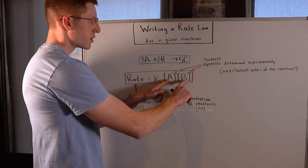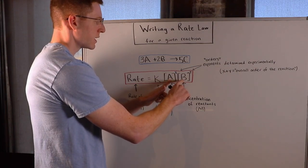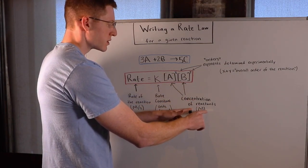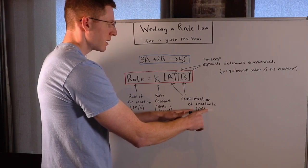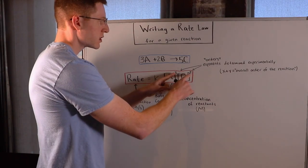times the concentration of the reactants. So A and B, the concentration of A times the concentration of B. And these are, of course, in units of molarity concentration. And they're actually raised to some exponents. And those exponents here are X and Y.